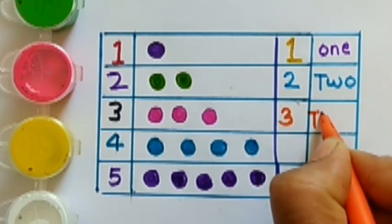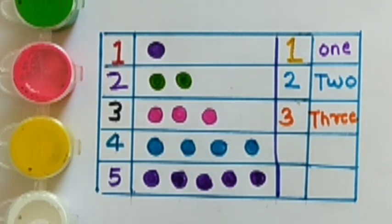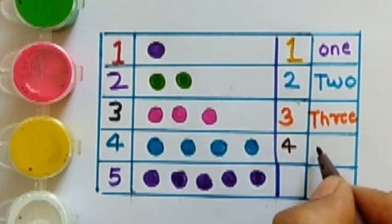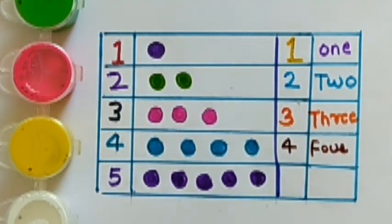Color t h r double e 3, 4 f o u r 4 brown color, 5 f i v e 5 pink color.